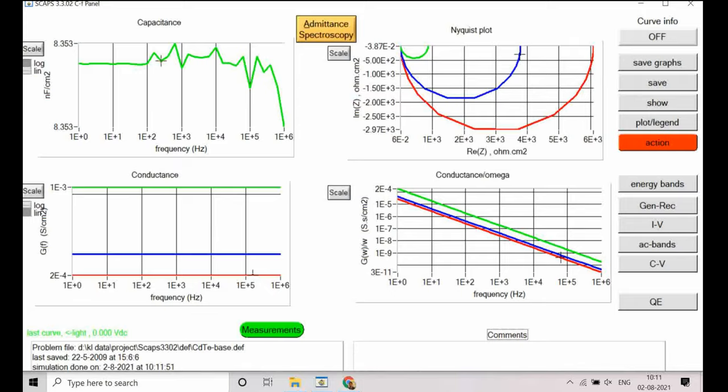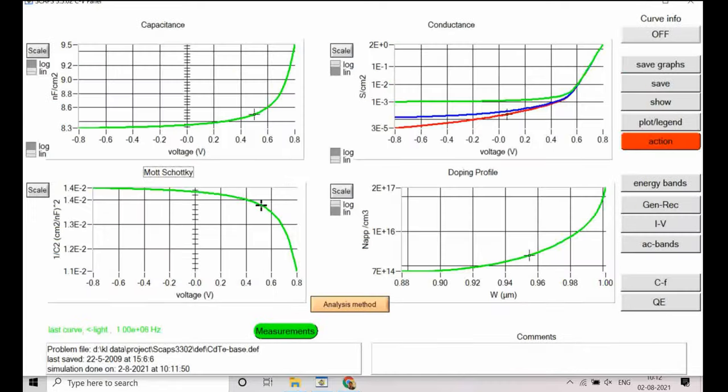Now CV. Now you can see there is a huge decrement in the Nyquist plot. You can see these values are hugely decreasing. Similarly CV plot, you can see here conductance values are changing.